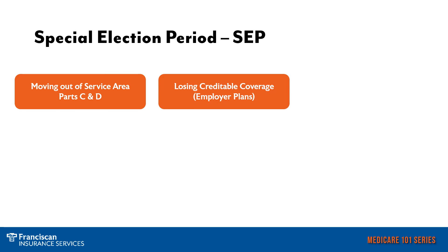The next special election period is losing creditable coverage. In some situations, people will decide they are going to stay on their employer coverage even though they are eligible for Medicare Parts A and B. In this case, you would need to have creditable coverage by your employer plan, otherwise you would receive a penalty. But if you do have creditable coverage through your employer and you choose to stay on that employer plan until maybe you're 67 or 68 years old, then you leave the employer plan due to retirement or whatever the reason might be, you would qualify for a special election period into your Part C and D Advantage plans. And depending on your situation, your Medicare Supplement — then you would use the special election period of losing creditable coverage.